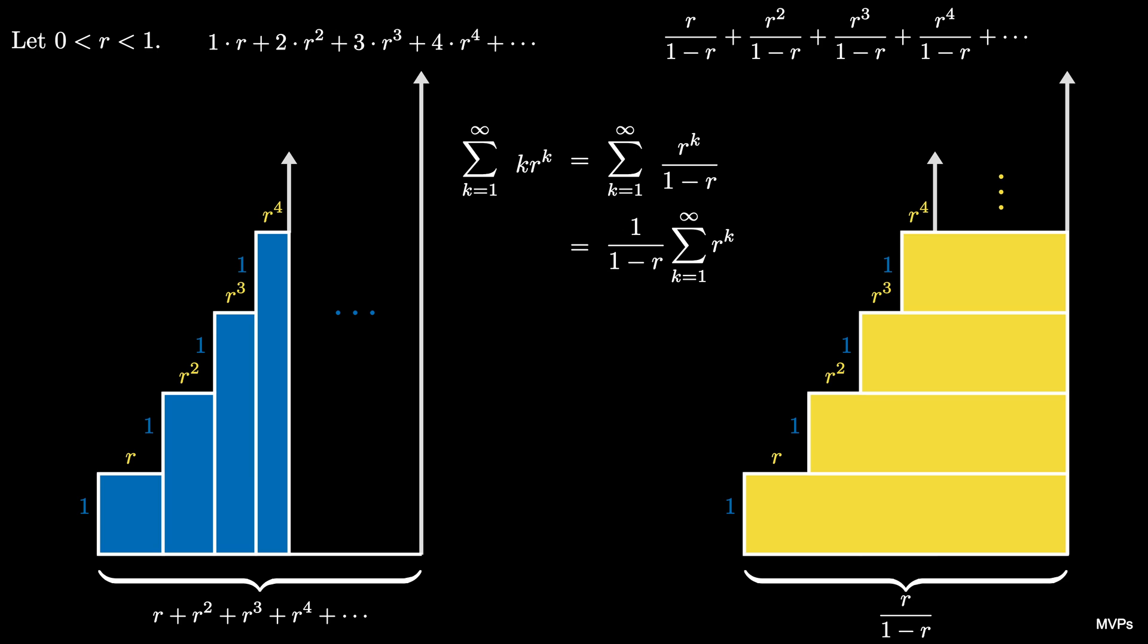But we can factor 1 minus r out of the latter sum leaving us with the geometric series with ratio r and first term r again which we know converges to r over 1 minus r.